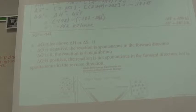If delta G is negative, the reaction is spontaneous in the forward direction. If delta G is zero, then the reaction is at equilibrium. If delta G is a positive number, the reaction is not spontaneous in the forward direction, but is spontaneous in the reverse reaction.